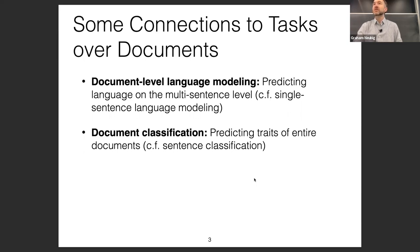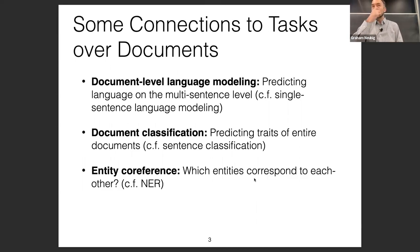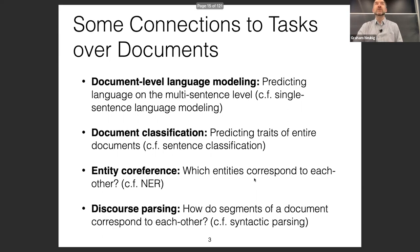Another task is document classification — predicting the traits of entire documents. In some cases this can be easier than sentence classification; for example, sentiment analysis is much easier over a long paragraph than over a short tweet, since a tweet might be missing a lot of contextual information. Then there's entity co-reference — which entities correspond to each other — which is more context-sensitive than NER. Finally, discourse parsing: the structure of a document or the relationship between sentences, as opposed to syntactic parsing of individual sentences.